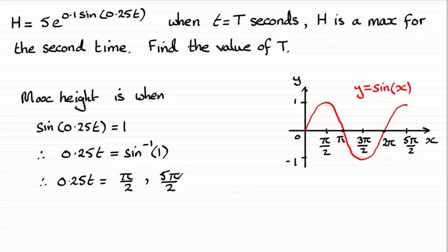So that's the time that we want, 5 pi upon 2 there. I say that's the time, that's not right. That's the solution that 0.25t would be. So we can see that when t equals T, we can see that 0.25T will equal 5 pi over 2.